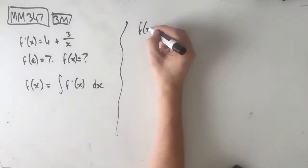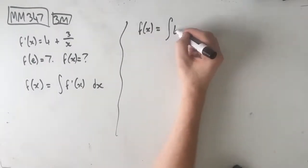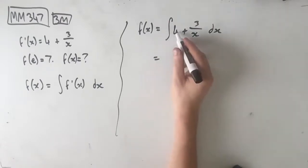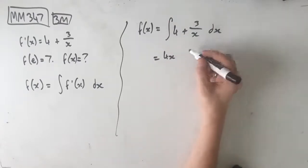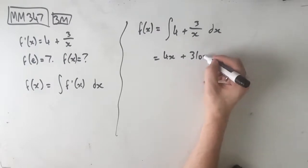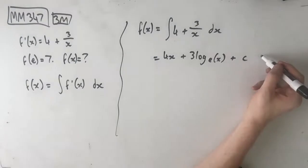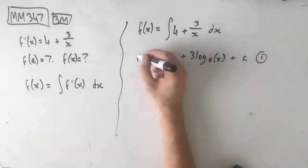Alright, so f of x equals the integral of 4 plus 3 on x dx. Integral of 4 is 4x, and the integral of 3 on x is 3 log e of x. Then we have our plus c on the end, of course, as always. This is our first mark.